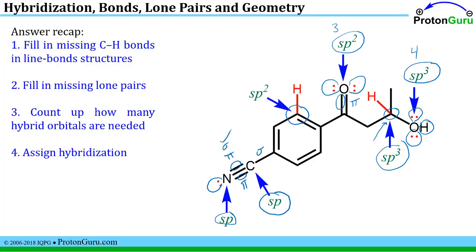Most problems in this video require us to assign hybridization as the first step, so this recap is important. First, fill in the missing CH bonds in the line-bond structure, since they're not always drawn. Also fill in missing lone pairs, because we need to know how many sigma bonds and lone pairs we have to determine which type of hybridization is needed. Once we know how many hybrid orbitals are needed, we assign the hybridization to correspond to that number of pairs.